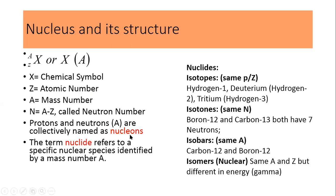Another term we will be using is nucleons. Nucleon is the collective term used for protons and neutrons, and it corresponds to the mass number. In nuclear chemistry, when we say nucleons, it means the combined number of protons and neutrons. Simply put, nucleons represent the atomic mass of the nucleus.